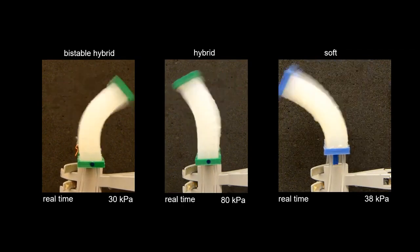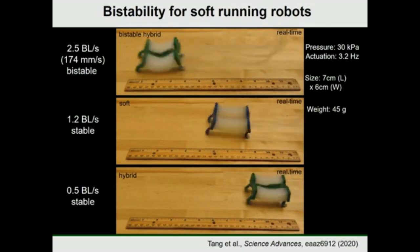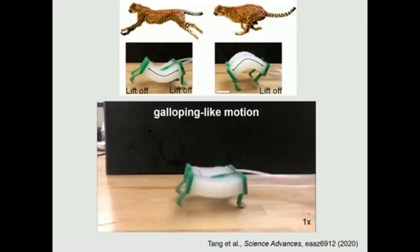This enables the robot to gallop across the surface, meaning that its feet leave the ground. Previous soft robots were crawlers, remaining in contact with the ground at all times. This limits their speed.